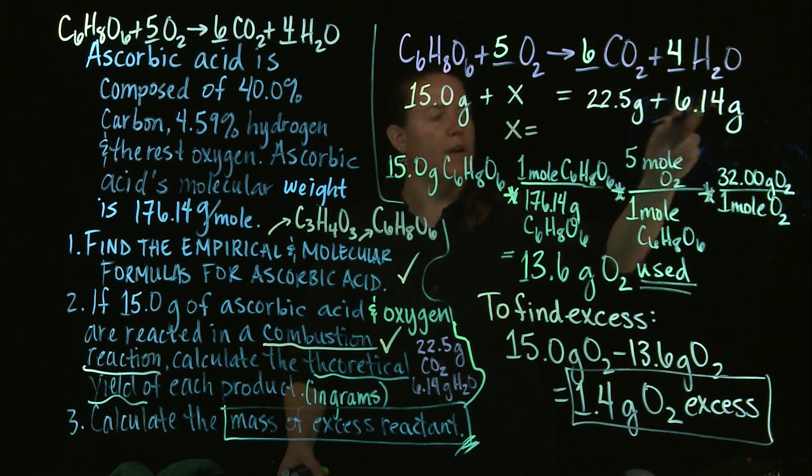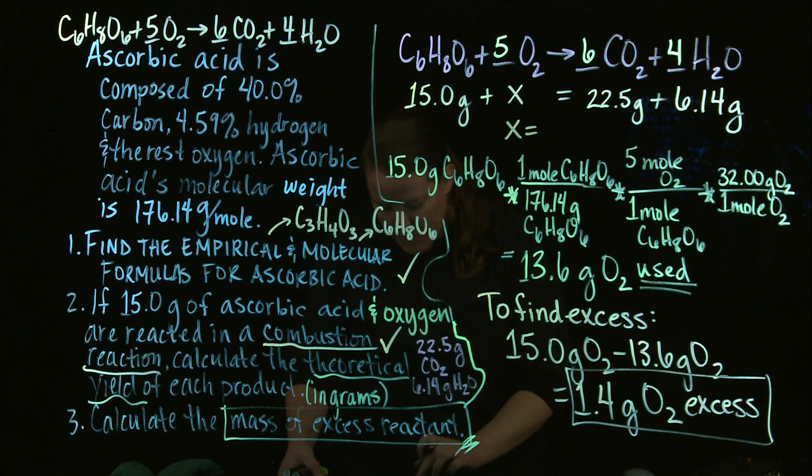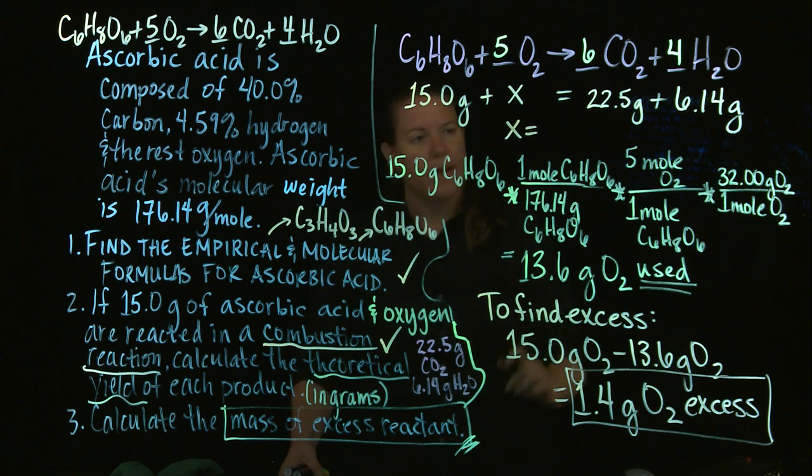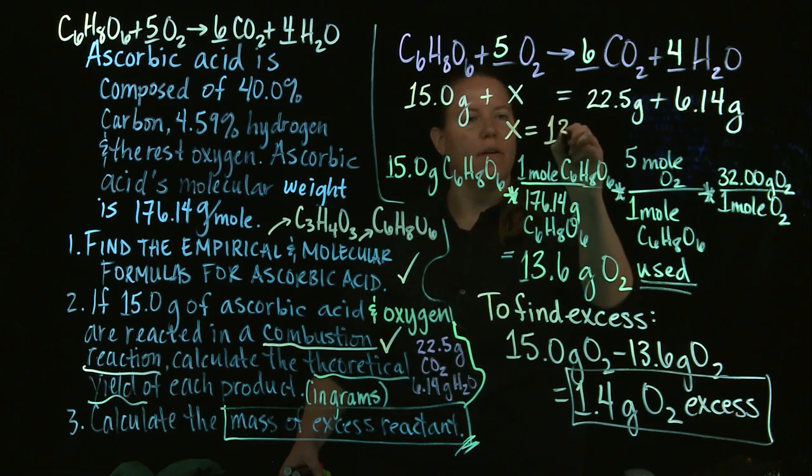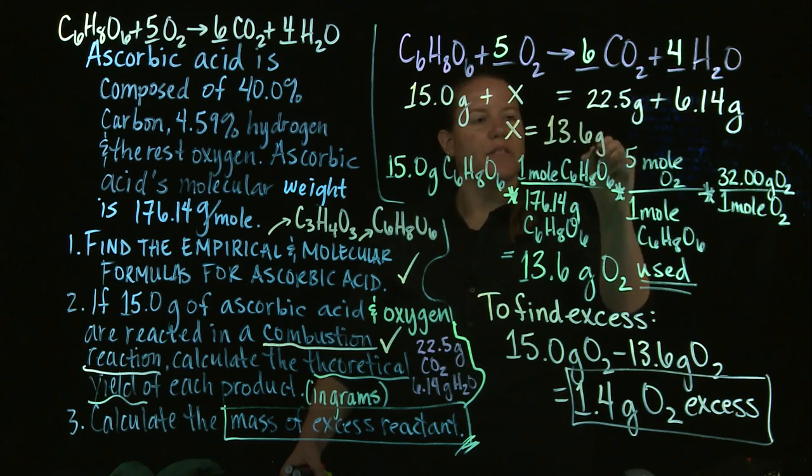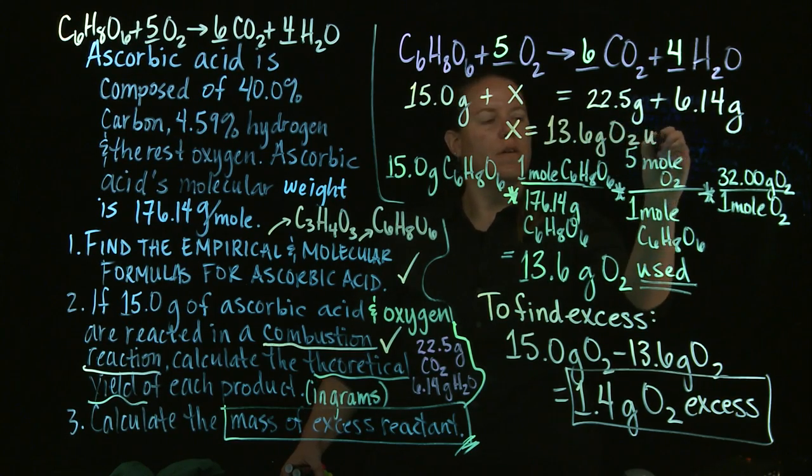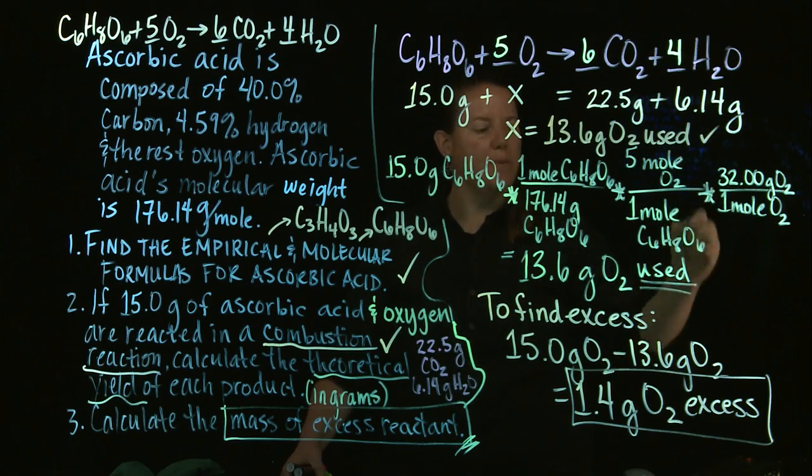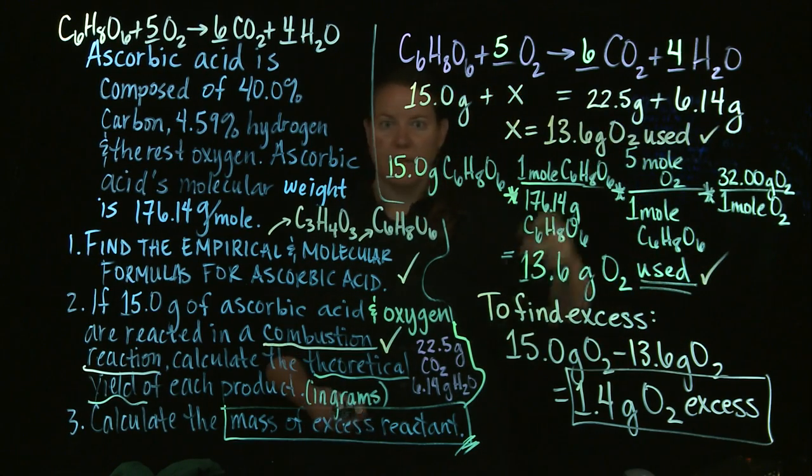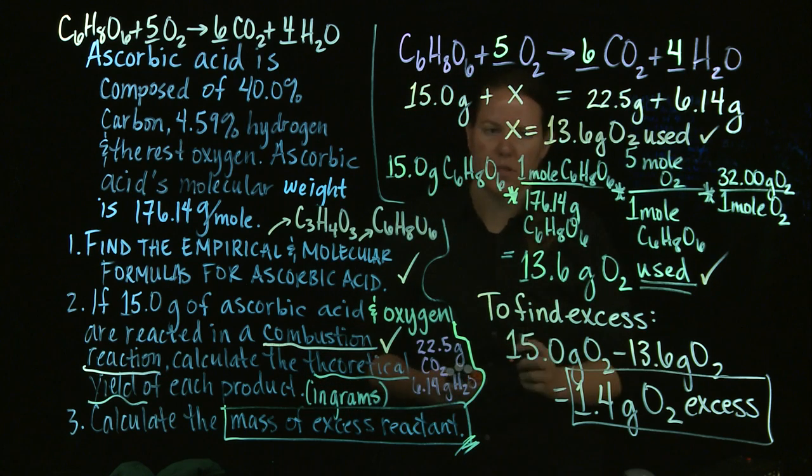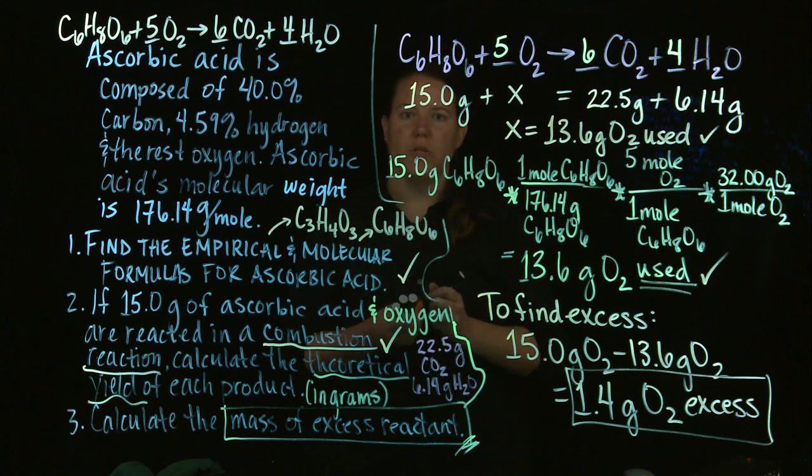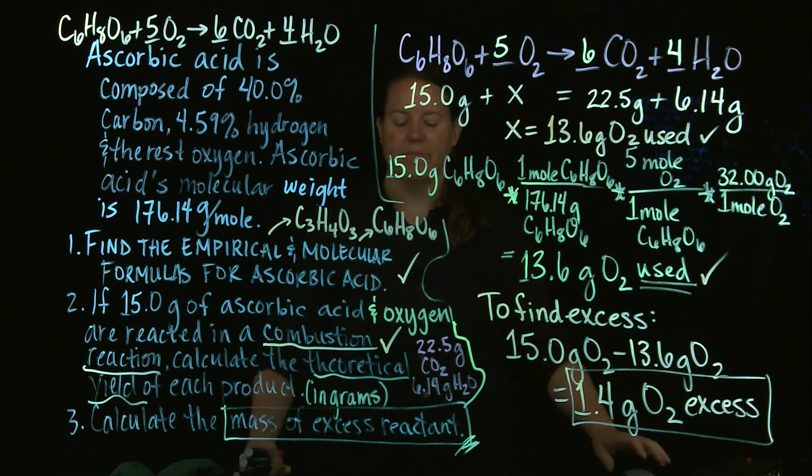If I solve for X, it's going to be 22.5 plus 6.14 minus 15. And I got 13.64, 13.6 grams of O2 was used in this reaction. A little bit easier way of finding the exact same thing I found from the stoichiometry. And it just used the law of conservation of mass.